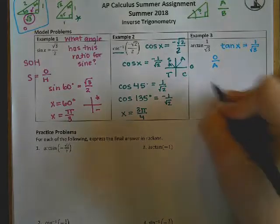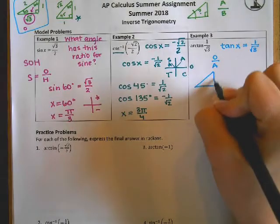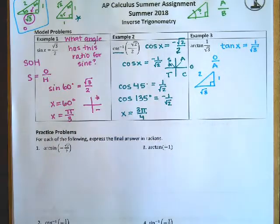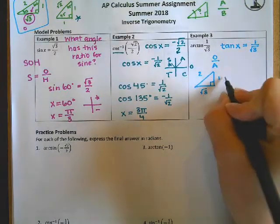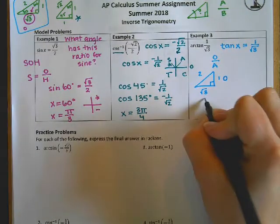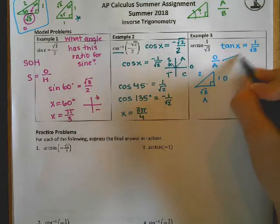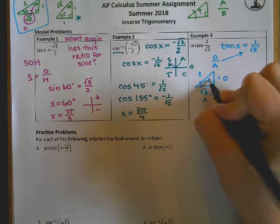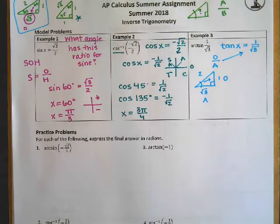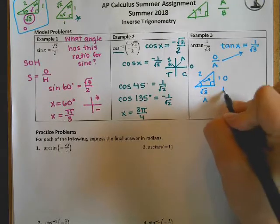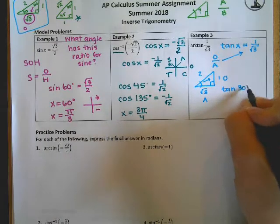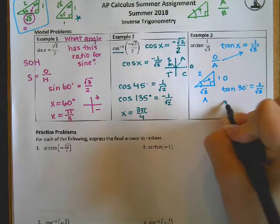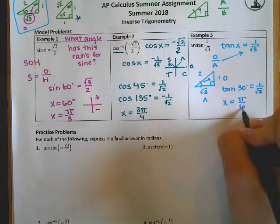And since it's all the way over there, I'm going to go ahead and redraw it. 1, 2, root 3. Now let's think about this. I need the opposite to be 1, and I need the adjacent to be root 3. That's what my tangent ratio is telling me. And so it must be this angle right here. That's the one that must give me 1 over the square root of 3. So that must be the tangent of 30 degrees, and that would be pi over 6.